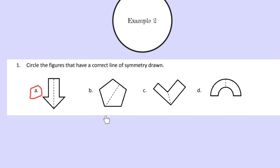In part B, we have a hexagon drawn, and this line appears to be cutting our shape in half. And if we were to fold this part of the hexagon onto this part of the hexagon, it would create an exact image. So we're going to circle part B.